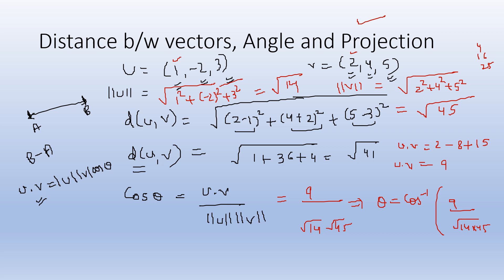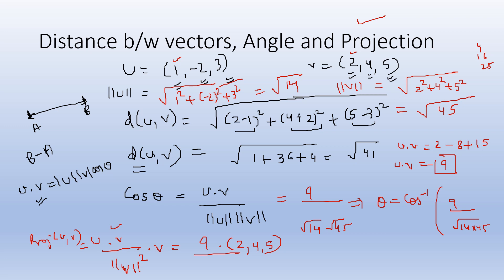For projection of U onto V: proj = (U·V / ||V||²) · V. U·V = 9, ||V||² = 45. So the projection vector = (9/45)·(2, 4, 5) = (2/5, 4/5, 1).